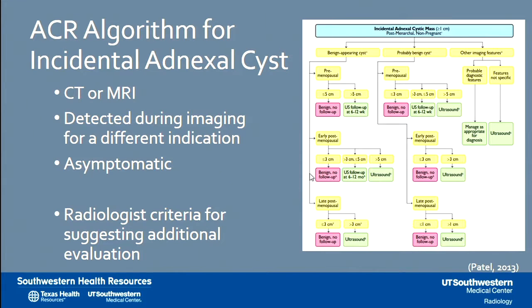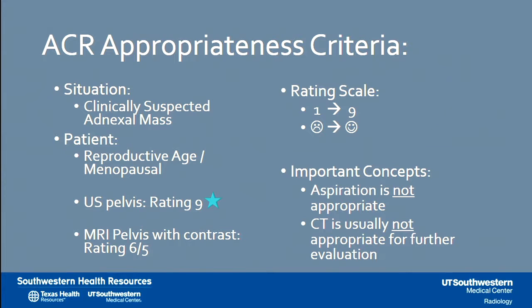This is the ACR algorithm — I keep it on my worktop all the time because it can be hard to remember the numbers, sizes, and when to follow things up. This is what your radiologist can provide. It's for people who've had a CT or MRI where we may not have seen the ovaries as well, to decide when to order an ultrasound for further evaluation versus when to assume it's a functional cyst.